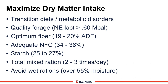Let's summarize this module. To optimize or maximize dry matter intake: number one, a solid transition cow to avoid metabolic disorder; quality forages with a calculated net energy value over 0.6 Mcals — that's why corn silage wins; optimal fibers with ADF 19 to 20% or NDF 28 to 32%; adequate non-fiber carbohydrates — sugars, starches, and pectins — at 34 to 38%, with starch content 25 to 27% depending on fermentability; if feeding total mixed rations, feed two or three times a day, especially in summer to maintain bunk life and palatability; and finally, avoid extremely wet rations — over 55% moisture. That concludes this module on dry matter intake. Thanks and have a good day.